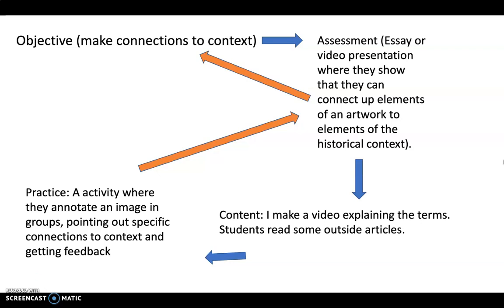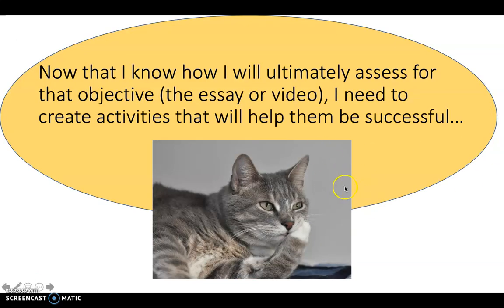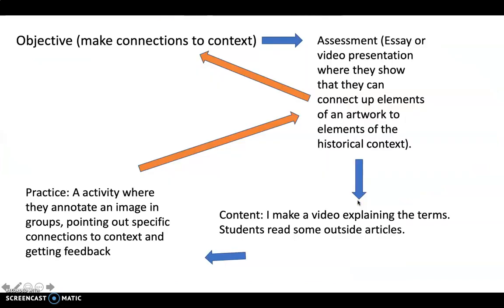I made a little chart to explain my thinking. The objective is to make connections to context. Following the blue arrow, I figured out my assessment — the essay or the video. Following the blue arrow again, I now need to create the content: I make a video explaining the terms, students read some outside articles, and I make sure I'm pointing them to parts of the articles or outside videos that make clear where the authors are using elements of context. Then I have to have them practice — I can't just expect them to immediately prove they can meet this objective.